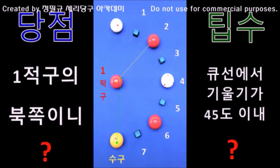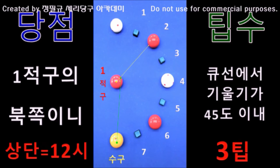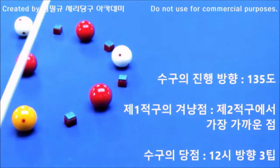2번 공 맞추기입니다. 당점과 팁수를 생각해 보세요. 1번 공과 조건이 같음을 알 수 있습니다. 따라서 정답은 상단 3팁이 되겠습니다. 이제 시연을 보겠습니다. 2번 공 맞추기입니다.